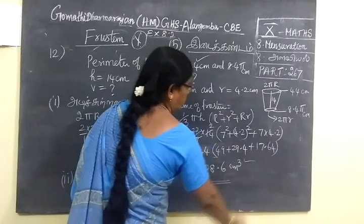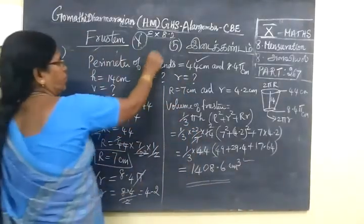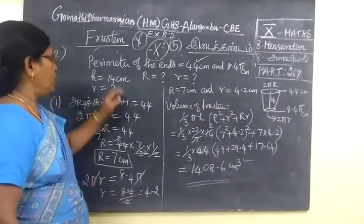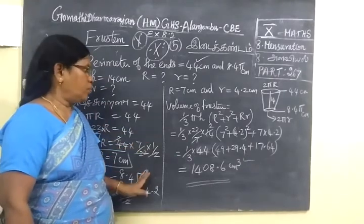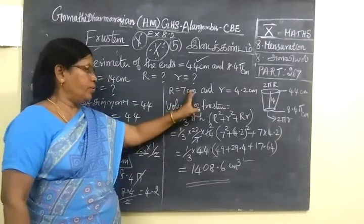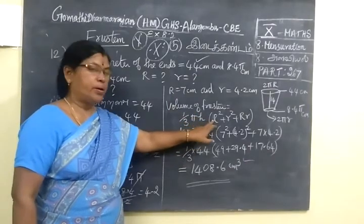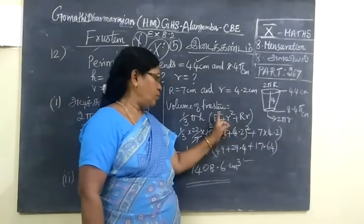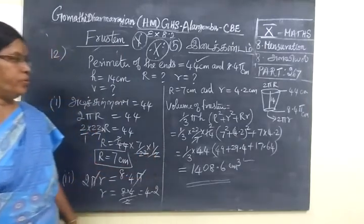So this also comes under a 5 mark question. Very, very important question. Now, the two perimeters given, you are finding capital R and smaller r. Then using the formula, 1 by 3 π h times capital R square plus smaller r square plus R times r, you find the volume of the frustum. Thank you.